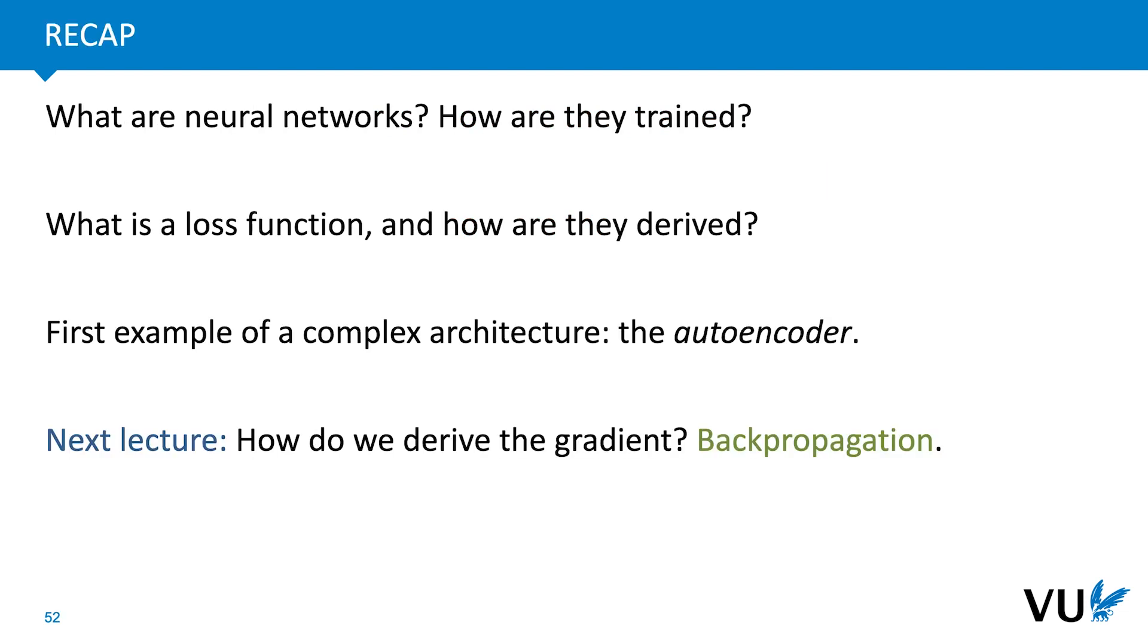For now, let's recap and end the lecture here. We've seen what neural networks are and how they are trained. We've seen what a loss function is and how they are derived from first principles. And we've seen our first example of a complex architecture, the autoencoder. In the next lecture, we will focus on the missing ingredient in our training algorithm. Given a neural network and a loss function, how do we work out its gradient?